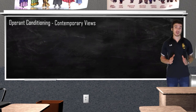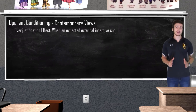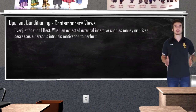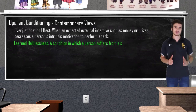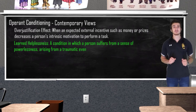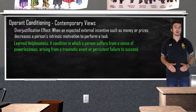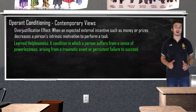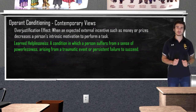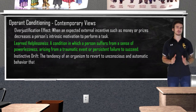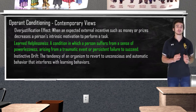Today, psychologists have discovered that there is much more to operant conditioning than what Skinner initially thought. The over-justification effect occurs when an expected external incentive, such as money or prizes, decreases someone's intrinsic motivation to perform a task. Learned helplessness is a condition when an organism suffers from a sense of powerlessness arising from traumatic events or persistent failure to succeed, and is thought to be one of the underlying causes of depression. We also know today that operant conditioning has some biological aspects — the idea of biological predisposition states it's easier to train a behavior using natural reinforcers, and there is also instinctive drift, where a naturally occurring behavior interferes with operant responses.